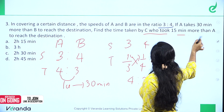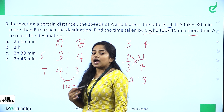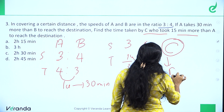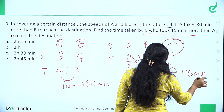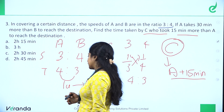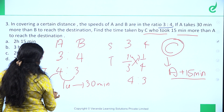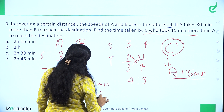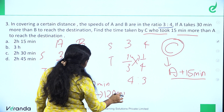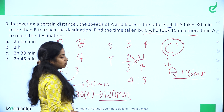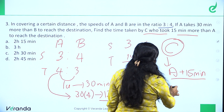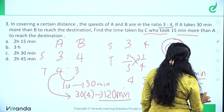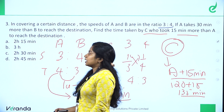Find the time taken by C, who took 15 minutes more than A to reach the destination. Time ratio 4 : 3, difference = 1 unit = 30 minutes. So A takes 4 units = 120 minutes. C = A + 15 = 120 + 15 = 135 minutes. The correct option is 135.